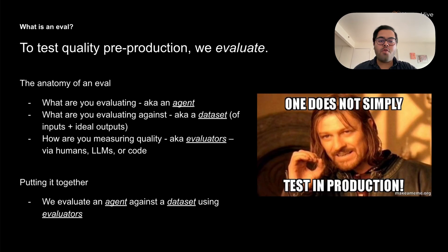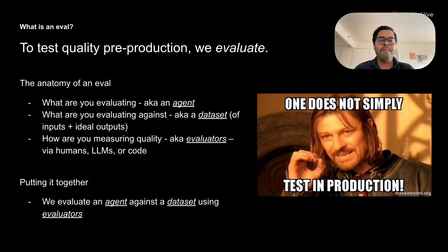So let's start with the fundamentals — what exactly is an evaluation? The fundamentals date back to unit and integration testing in traditional software. Just like you wouldn't want to push changes to production without any tests in traditional software, you wouldn't want to push changes to your AI application without any evals. When I talk to teams and ask them about their evaluation strategy, I often get responses like 'oh yeah, we test things before production' or 'we have some automated test setup.' But when we dig deeper, there's really a lot of uncertainty about what makes a good evaluation framework. To test quality before production, we need three key components.